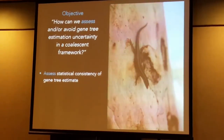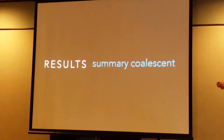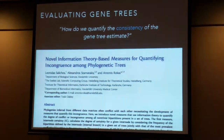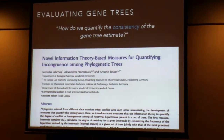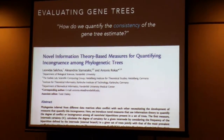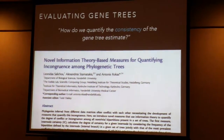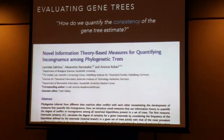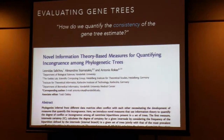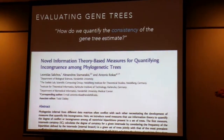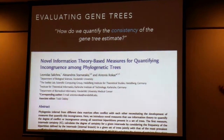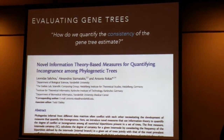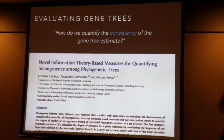Coming back to our objective — how can we assess or avoid gene tree estimation uncertainty in a coalescent, summary coalescent framework — I will first focus on assessing the statistical consistency of our gene tree estimates. The question is how do we quantify that consistency. What I used is a method developed by Salichos, Stamatakis, and Rokas, where they assess the consistency and similarity between trees with a new value.